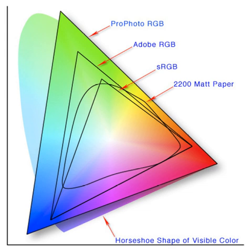But it's not clear that they thought of colors as being points in color space. The color space concept was likely due to Hermann Grassmann, who developed it in two stages.